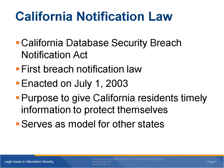Under the law, an entity must notify California residents of a breach of its computer systems. It must give notice if unauthorized individuals access and take a resident's unencrypted data. The law defines personal information very broadly — it is information that allows a person to be identified. Personal information includes a person's first name or first initial and last name, combined with any of the following: social security number, driver's license number or California identification card number, account number or credit or debit card account number, medical information, or health insurance information.